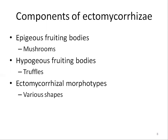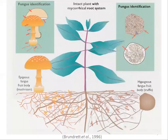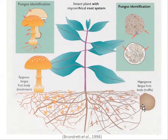Because root morphology changes into different shapes as a result of ectomycorrhizal association, these shapes are known as morphotypes. In this picture you can see the different components of ectomycorrhizal fungi — the host plant representing an angiosperm, the epigeous fungus as a mushroom or basidiomata, and the hypogeous fungus fruiting body which is the truffle, a member of Ascomycota, while the mushroom is a member of Basidiomycota.